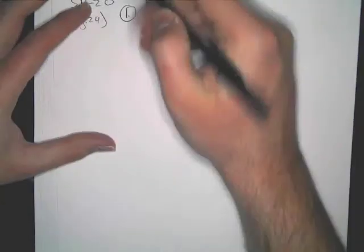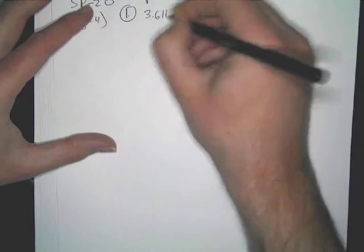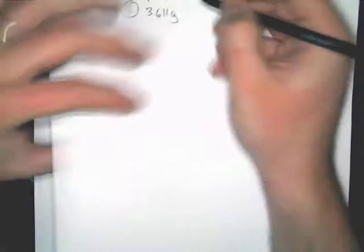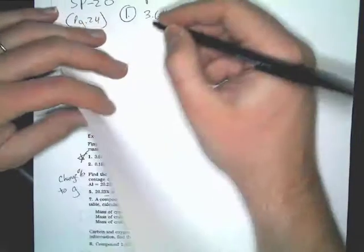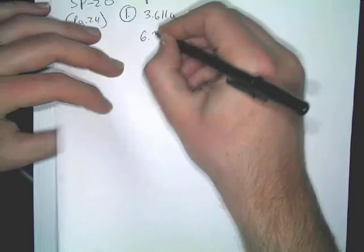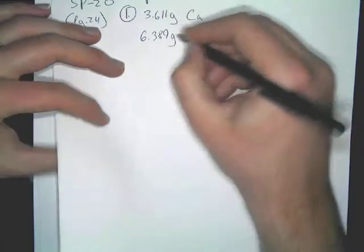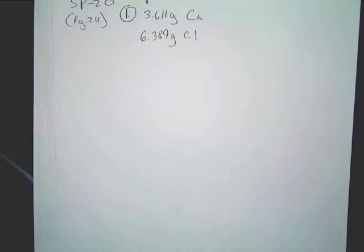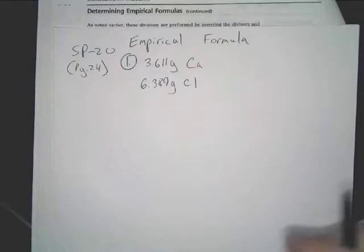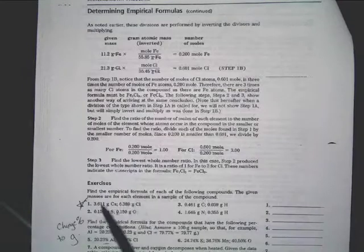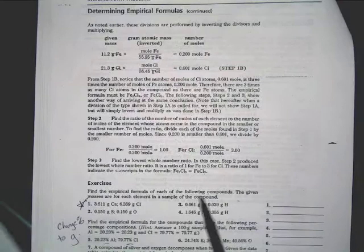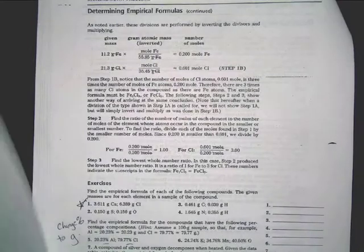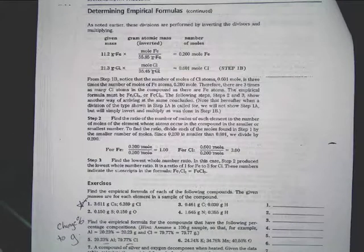Now, I want you to just write that down. That's the first thing. So you've got 3.611 grams of calcium, 6.389 grams of chlorine. Now, right there, that doesn't tell you much. All the problem is asking you is simply saying, find the empirical formula of each of the following compounds.